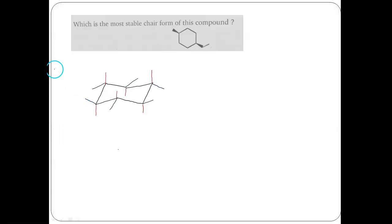The question is: which is the most stable chair form for this compound? Is it cis or trans? And how should it be?